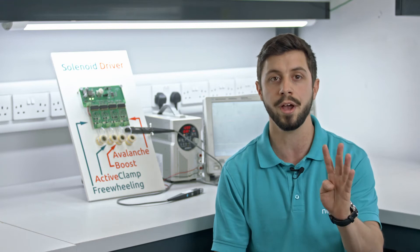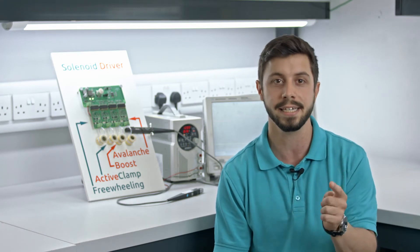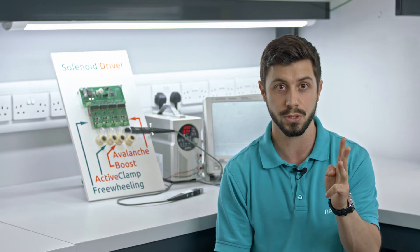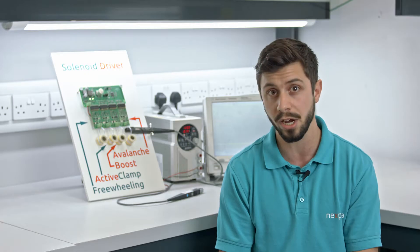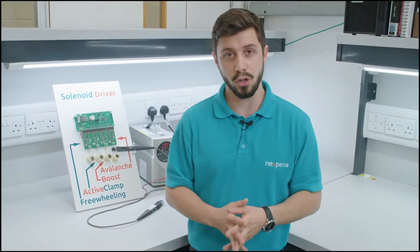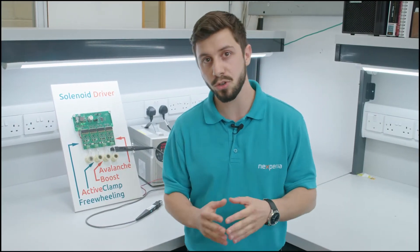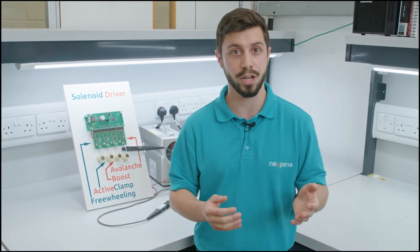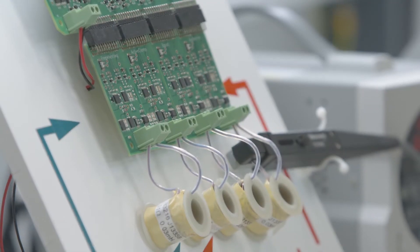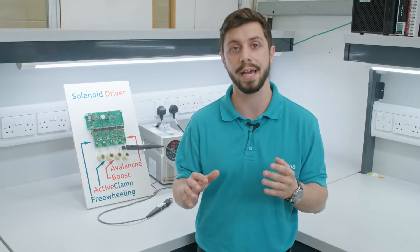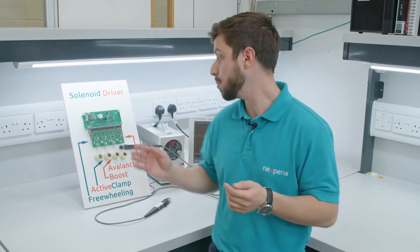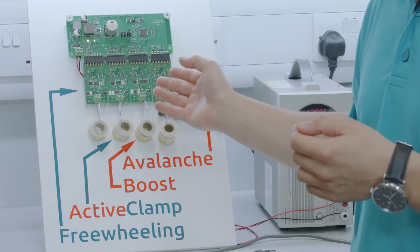There are four ways to drive solenoids: freewheeling, active clamp, boost, and repetitive avalanche. In this demo, we will be showcasing the four topologies, how they differ, and Nexperia's offerings for each of them. Due to the sheer amount of solenoids used in a car, it is vital to provide a low-cost solenoid drive topology. Often this comes at the trade-off between low cost, high speed and efficiency, as well as best reliability, with each topology having its strengths and weaknesses.